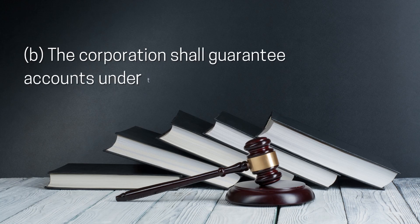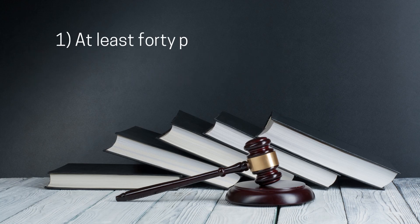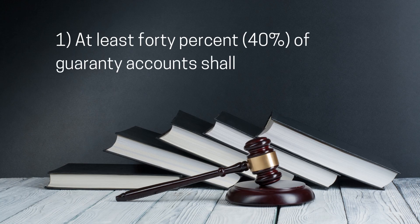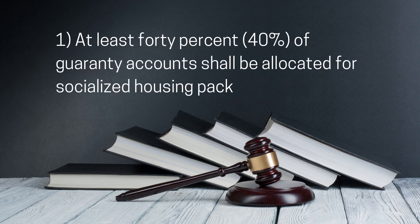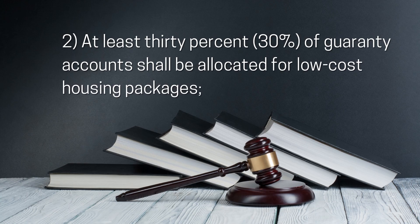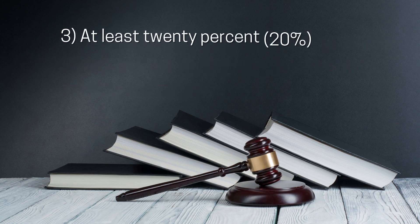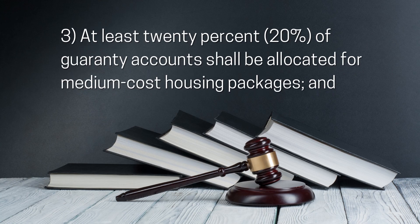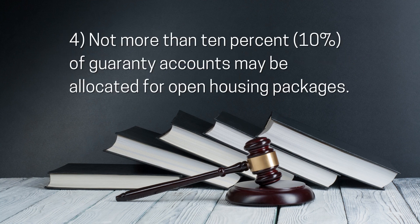B. The corporation shall guarantee accounts under this Act as follows: 1. At least 40% of guarantee accounts shall be allocated for socialized housing packages. 2. At least 30% of guarantee accounts shall be allocated for low-cost housing packages. 3. At least 20% of guarantee accounts shall be allocated for medium-cost housing packages. 4. Not more than 10% of guarantee accounts may be allocated for open housing packages.